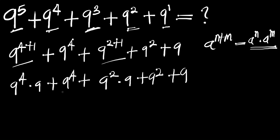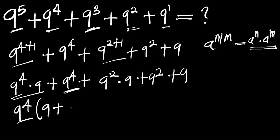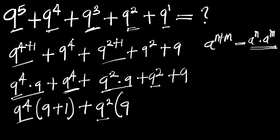So what we do next is: here we have 9 to the power of 4 and here we also have 9 to the power of 4, so we can factor that out. We get 9 to the power of 4 times (9 plus 1). Similarly, here we have 9 to the power of 2 and 9 to the power of 2, so we factor that out: 9 to the power of 2 times (9 plus 1), and we have plus 9.